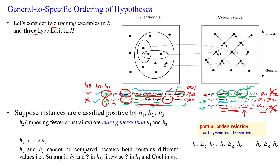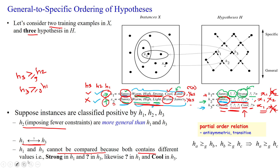When we compare H2, H3, and H1, H3 is more general than H2, and H3 is more general than H1. We can specify the more-general-than relationship, or more-general-than-or-equal-to relationship. H2 is imposing only fewer constraints — only H2 is having the sunny constraint and remaining all are general constraints. H1 and H3 cannot be compared because both contain different values: strong in H1 and a quotient symbol in H3 at that position.